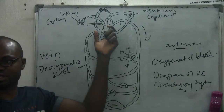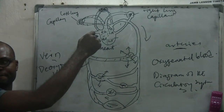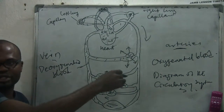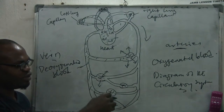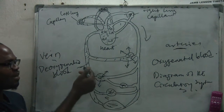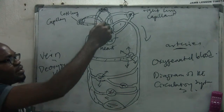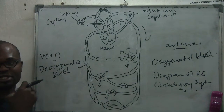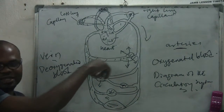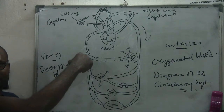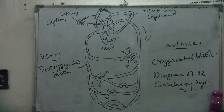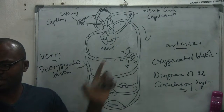When the blood returns to the lung section, it picks up oxygen again as you breathe in. Once it gets oxygen, the heart pumps it back through the arteries to the various parts of the body. Once the oxygen is used up, the blood becomes deoxygenated — blood without oxygen. It enters back into the veins, gets back to the lung section, gets more oxygen again, and the cycle continues.